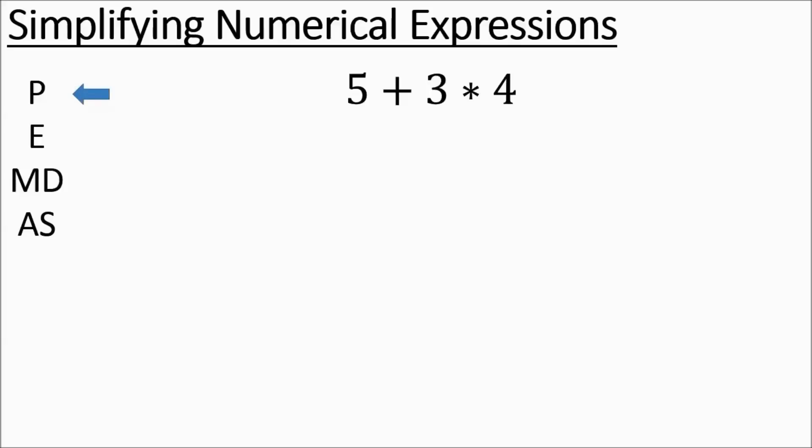First, you look for parentheses. There are no parentheses. Then you look for exponents. There are no exponents. We look at multiply dividing. We do have some multiplying. You have this positive 3 times 4. The 5 is going to drop down. You're going to do the 3 times 4, and you end up with a positive 12.